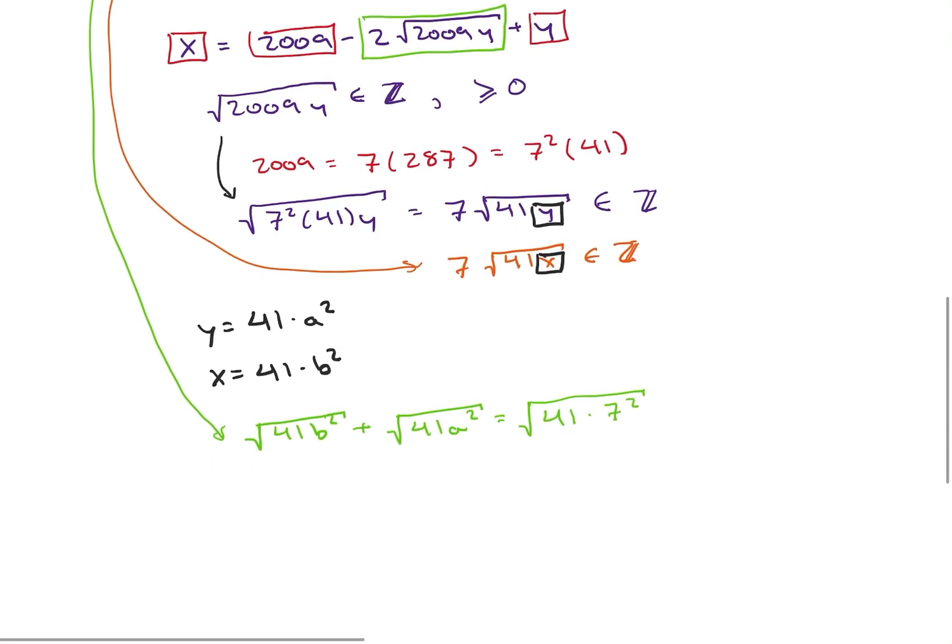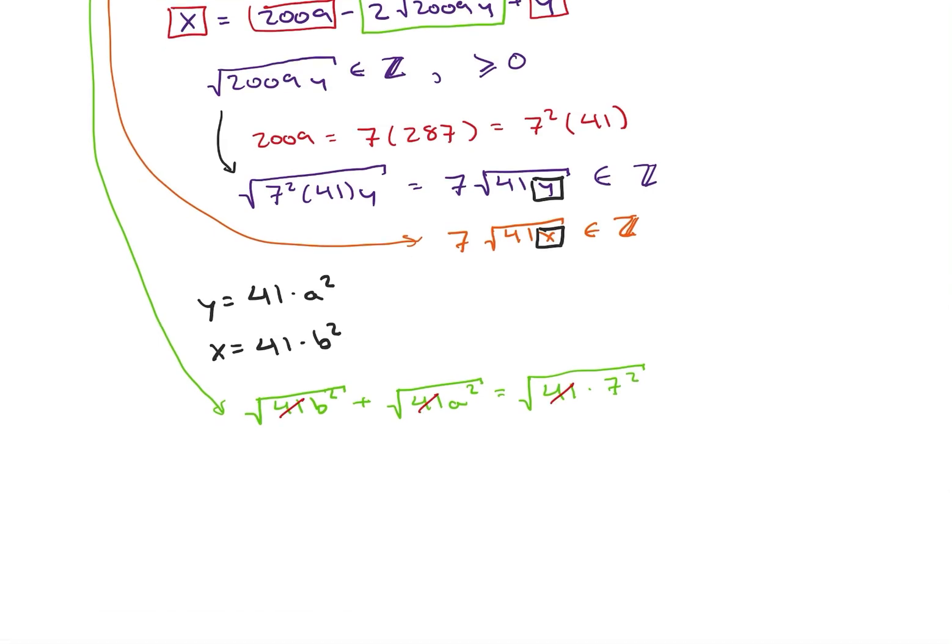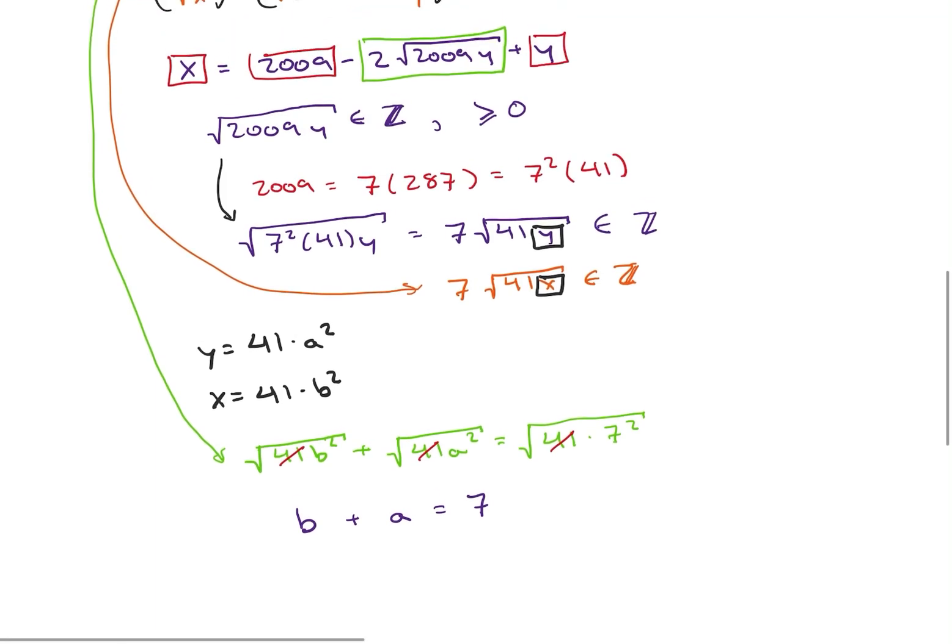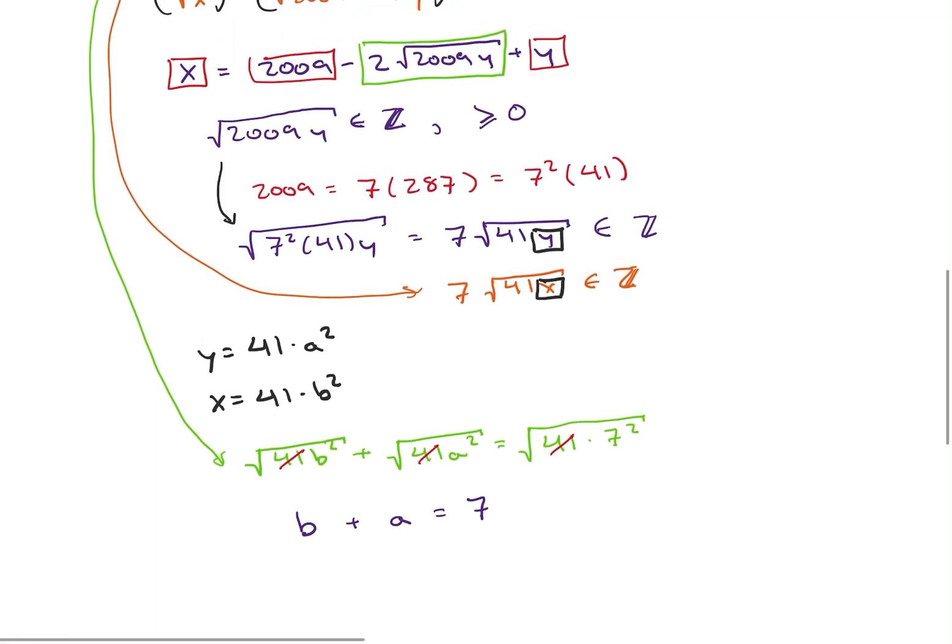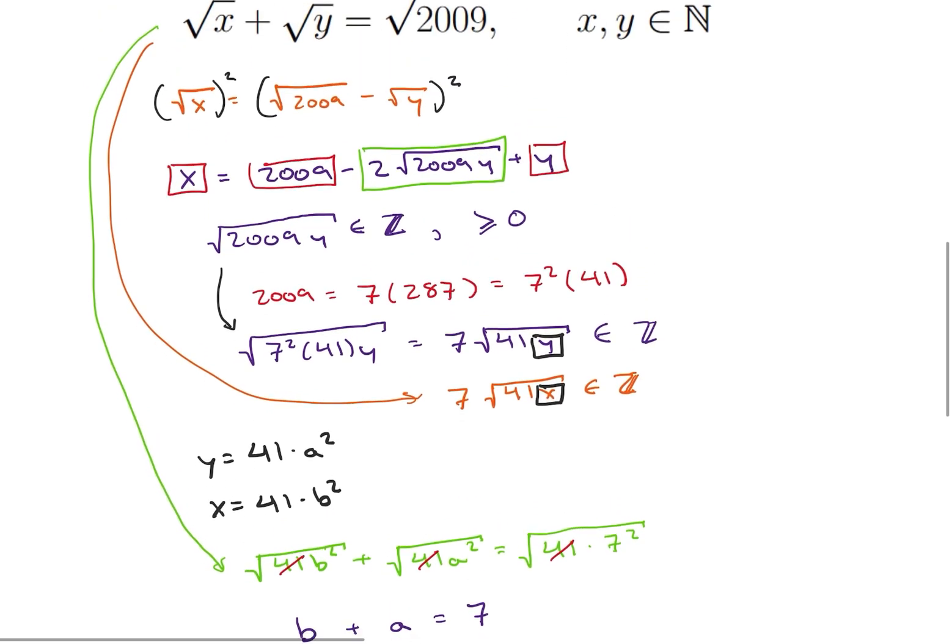So if I take out a square root of 41, then what I'm left with is going to be square root of b squared is b plus square root of a squared is a and square root of 7 squared is 7, which just tells me that b plus a is going to be equal to 7, which is kind of an interesting little solution we get here.